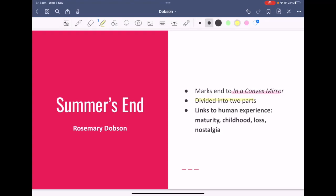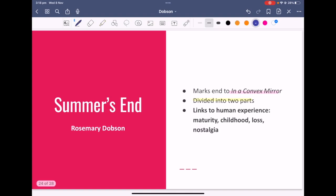Hello, today we'll be looking at the poem Summer's End by Rosemary Dobson. This poem marks the end to Dobson's poetry collection In a Convex Mirror, and if you watched the video on Young Girl at a Window, you'll know that Young Girl was also part of the In a Convex Mirror poetry collection.